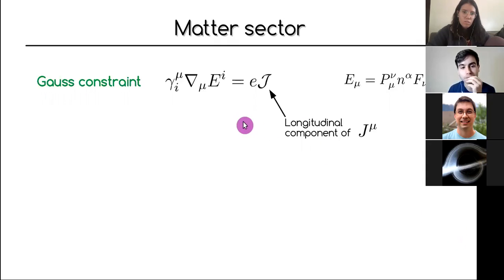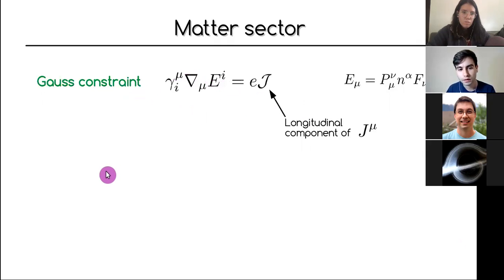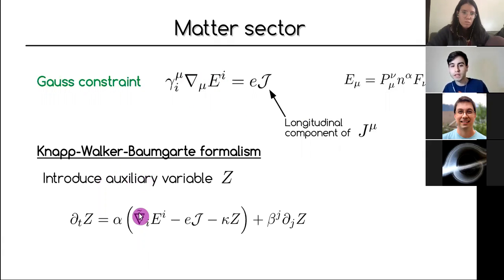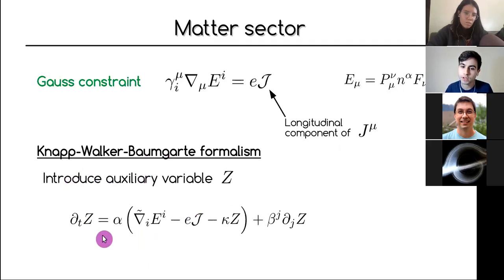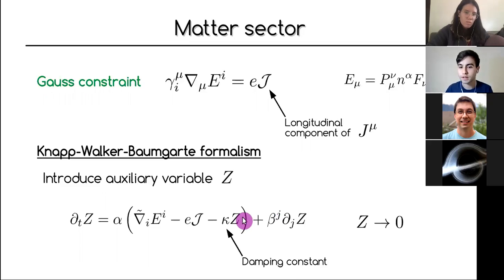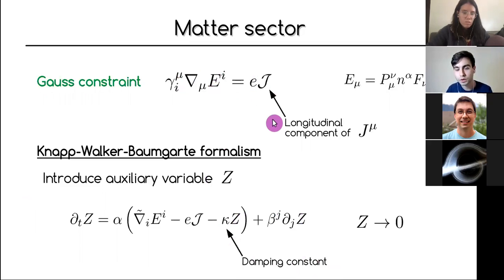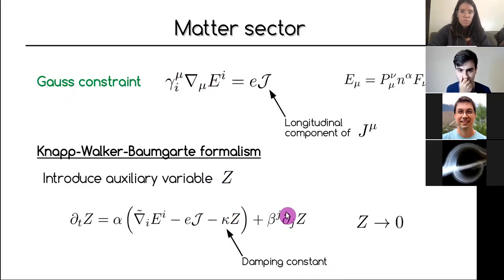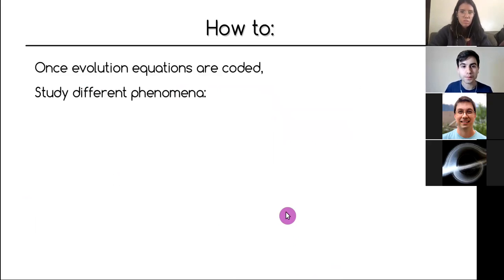Similar to pure GR, we also need to satisfy a Gauss constraint for this U(1) gauge theory. To do that we use the Z4 or Lorenz-damping formalism, which introduces an auxiliary variable with an evolution equation. Adding a damping constant stabilizes the system. Without this, the Gauss constraint — even if satisfied initially — would grow during evolution and the simulation would crash.